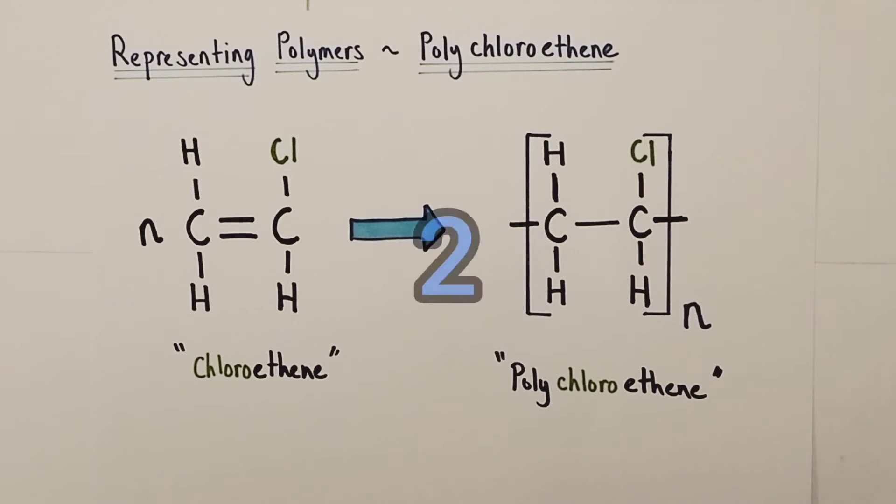On to example number two. This one is called chloroethene. You can probably see why. It's essentially an ethene molecule but with one hydrogen substituted out for a chlorine atom. Again we have the nth term in front to say that there are many of these chloroethene monomers present in the polymerization reaction. Under the correct conditions those monomers will join together to form the polymer polychloroethene.